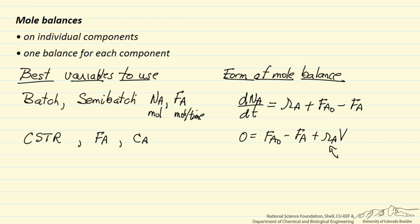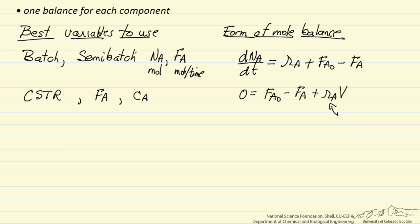The third type of ideal reactor is a plug flow reactor. Here the best variable typically to use is the molar flow rate. The typical form of the starting equation, again we're looking at steady state reactor, is the change in that molar flow rate as a function of cumulative volume is equal to the rate of reaction.